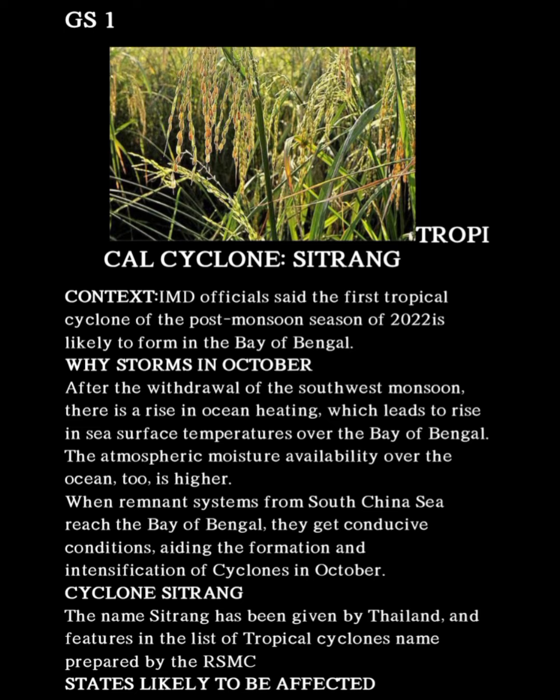IMD officials said the first tropical cyclone of the post-monsoon season. Post-monsoon refers to the retreating monsoon — winds spill across the Himalayas and flow to the southwest across the country, resulting in clear sunny skies. The post-monsoon season of 2022 cyclone is likely to form in the Bay of Bengal, starting from there. After the withdrawal of the southwest monsoon, there is a rise in ocean heating, leading to a rise in sea surface temperatures over the Bay of Bengal.